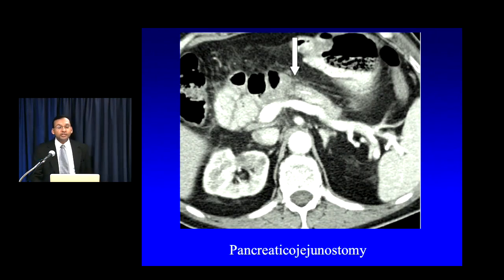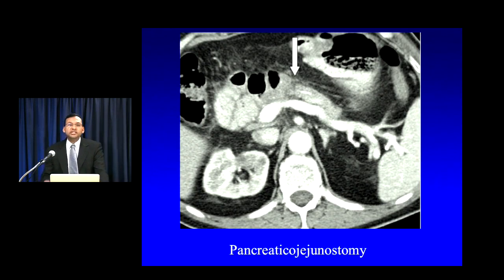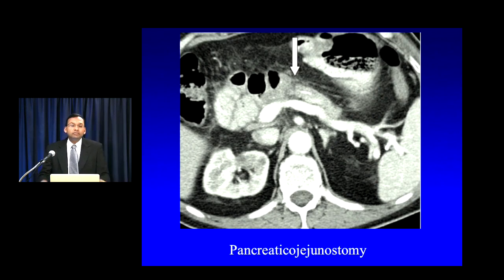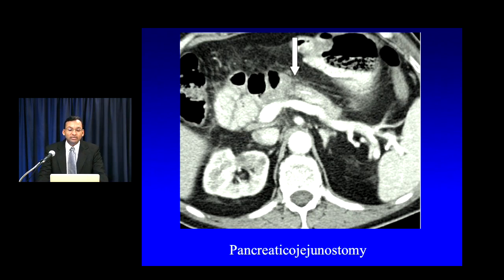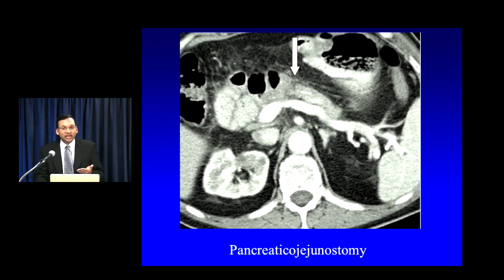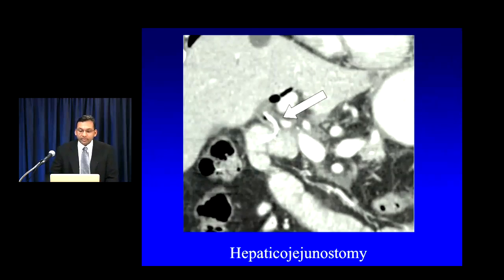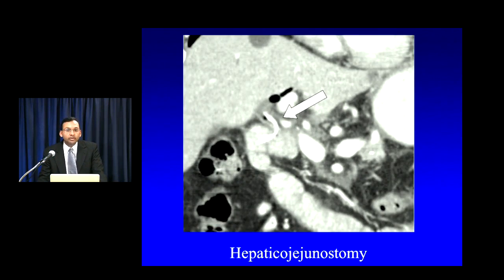The first thing to do anytime you're looking at one of these cases is to find the three anastomoses. The pancreaticojejunostomy tends to be most obvious in the axial plane, usually near midline or slightly to the right, with loops of small bowel in the right upper quadrant extending towards the hepaticojejunostomy. It is not uncommon to identify a radiodense linear foreign body within the pancreatic duct extending across the anastomosis — that's a pancreatic duct stent, increasingly used by surgeons to minimize the risks of a pancreatic leak or fistula. The hepaticojejunostomy tends to be most obvious in the coronal plane, so I always use coronal MPRs to identify this anastomosis.